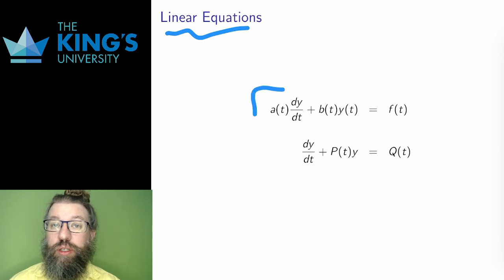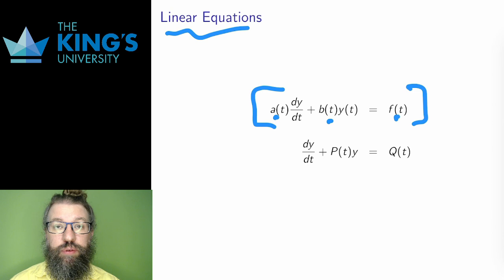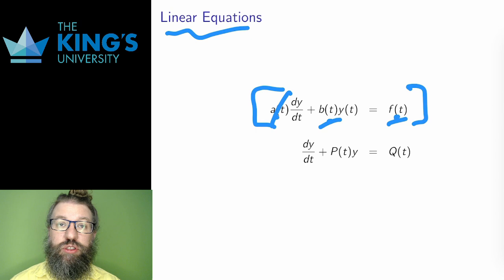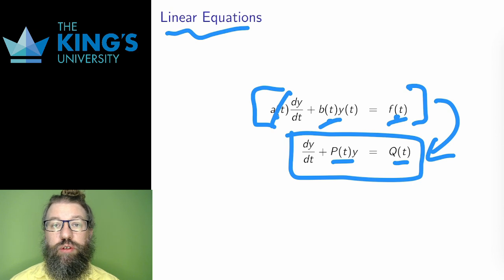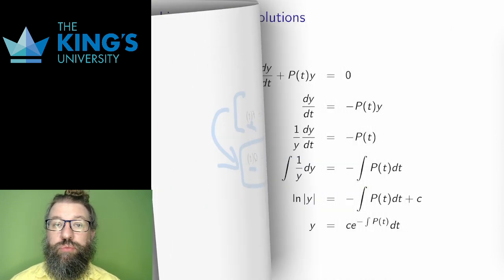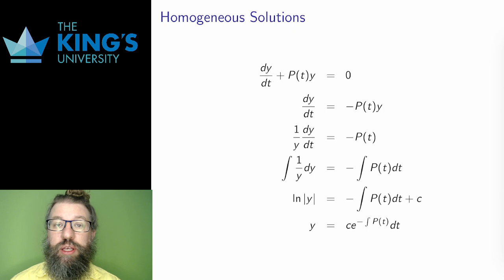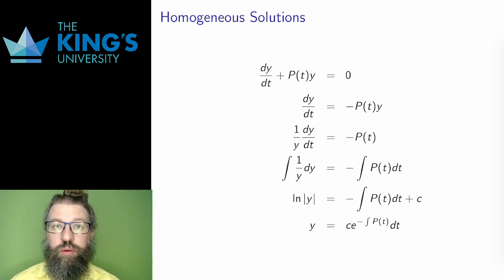A general linear equation has this form with coefficient functions a, b, and f. I can divide by the coefficient function a(t), as long as I'm careful about denominators and domain. If I divide by a(t), I can write it in standard form where the conventional names for the two coefficient functions are capital P and capital Q. So I have a derivative, P times the function y, and Q with no y's on the right side of the equation.